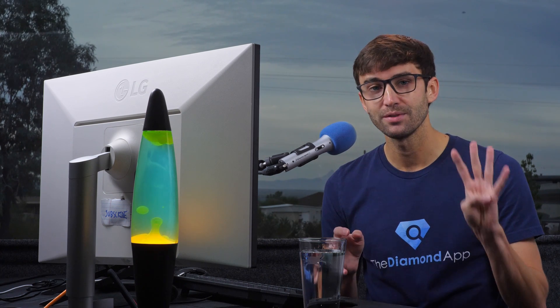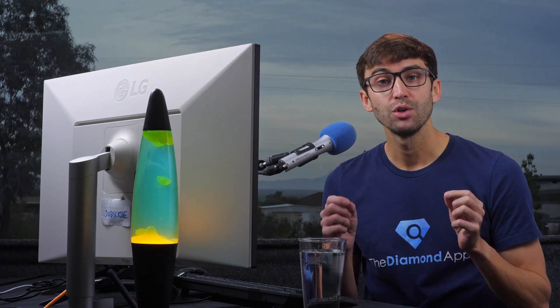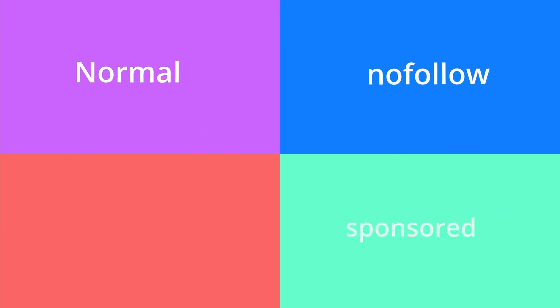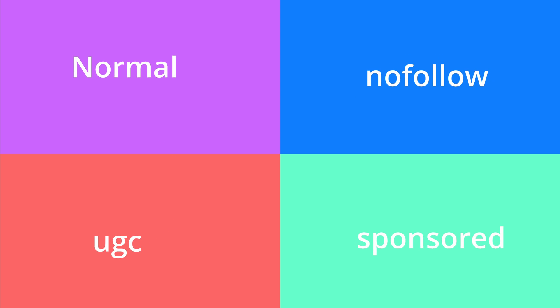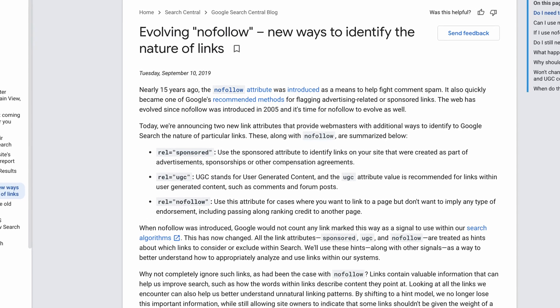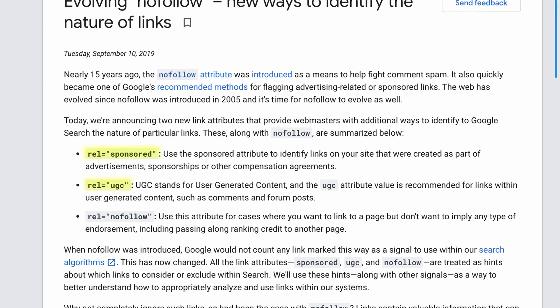Okay, so there are four different ways that you can communicate your relationship with a linked page to search engines. You have regular, nofollow, sponsored, and UGC, which stands for user-generated content. For a while, the only options were a regular link or a nofollow link, but then in 2019, Google introduced sponsored and UGC.